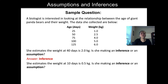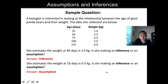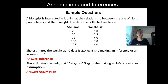However, what if she estimates that the weight at 10 days is 0.5 kilograms? We didn't collect any data less than 25 days. So although 0.5 kilograms might actually be a good estimate, what she is doing here is making an assumption — she's assuming that the trend is going to continue outside of the range of data collected. This is just one example of a type of question you might get requiring you to know whether something is an inference or an assumption.